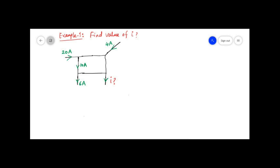In this diagram we first need to name the different nodes. A node is a junction where two or more circuit elements are connected together. Here, three branches are connected together — we name it A. Here also three branches are connected — name it B. Here is C, and this node is D.